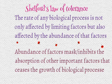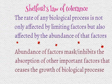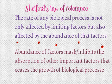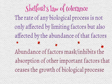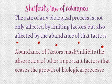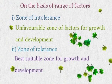Shelford's law of tolerance is a sort of modification of Blackman's law and Liebig's law. According to Shelford's law, the rate of any biological process is not only affected by limiting factors, but is also affected by the abundance of those factors. For photosynthesis, if low concentration of carbon dioxide affects the rate, then abundance of carbon dioxide also affects the rate. Abundance of factors will inhibit the absorption of other factors responsible for the development and growth of biological processes, which will stop the growth.